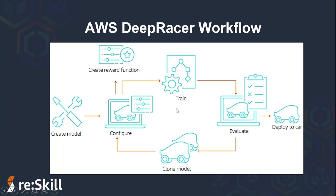So you can use the AWS DeepRacer workflow to create, deploy, and tune an AWS DeepRacer model. You start with creating a model, then configure the model parameters using the console. After building the model, use the simulator to train your model. Now let's go to the AWS console and see how to create and train a model.